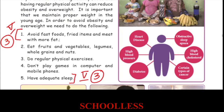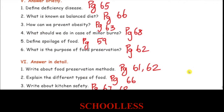To prevent obesity: avoid fast foods, fried items, and meat with more fat. Eat vegetables and fruits daily. Do daily exercise. Don't play games on computers and mobile phones. Have adequate sleep.